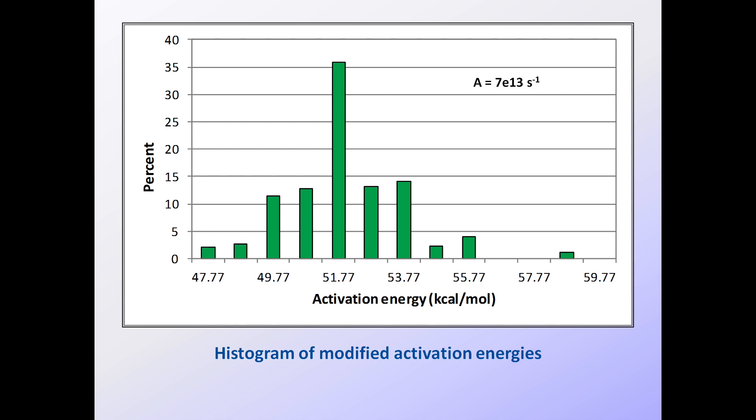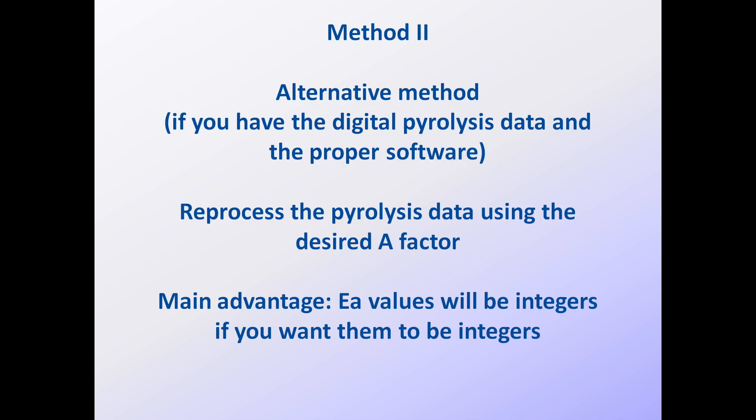In summary, this method is quick, easy, and accurate. Its only minor disadvantage is that EA values will seldom turn out to be integers.